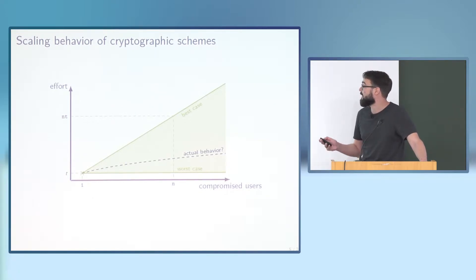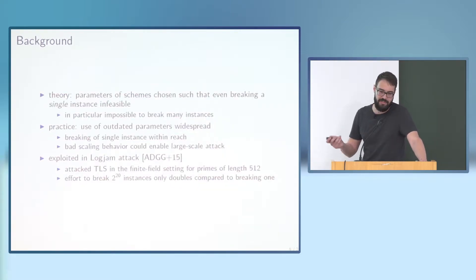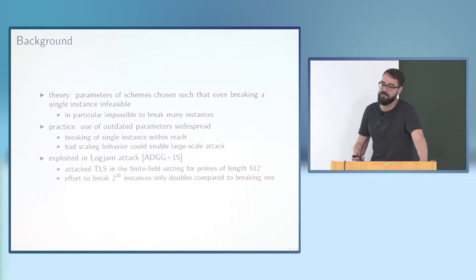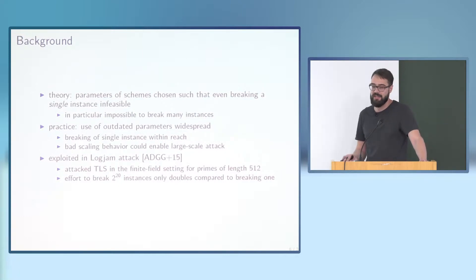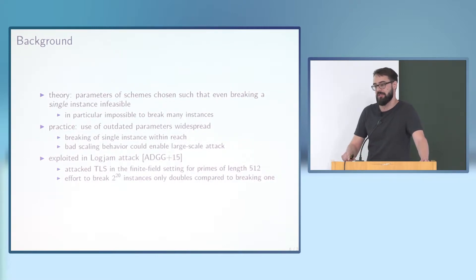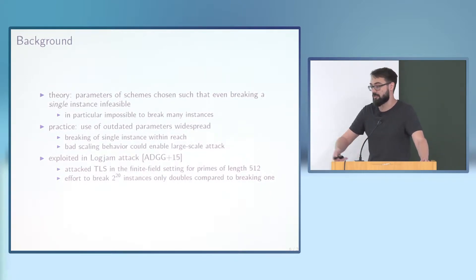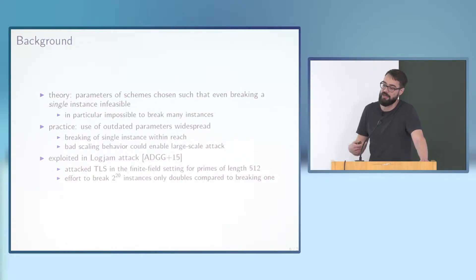This probably sounds a bit obscure at first, because in theory we choose parameters such that it should not be possible to break even a single instance. However, in practice it's quite widespread that users rely on outdated parameters. In that case, adversaries with access to substantial resources might break single instances of the scheme, and the scaling behavior can make a huge difference. If the scaling is good, there is a mounting cost of computational effort needed. If scaling is bad, an attacker could break lots of instances in basically the same time as one.